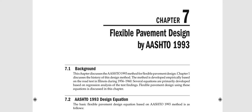Let us start Chapter 7: Flexible Pavement Design by AASHTO 93. The name of the method tells that it is very old — it was developed in the early 1960s and finally implemented in 1993. Nowadays I do not know whether any design agency uses this method, but we still need to learn it for several reasons.